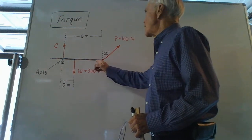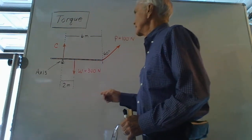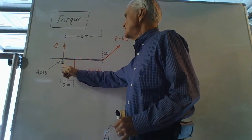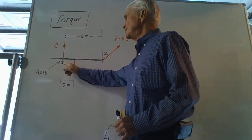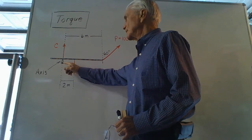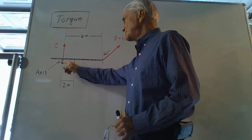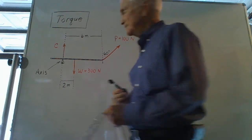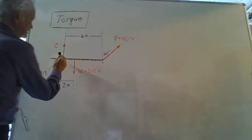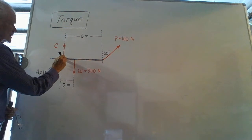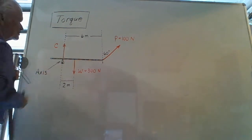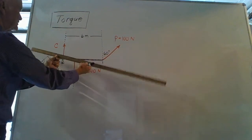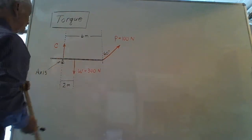I show a rod placed on top of a pyramid-shaped object called a fulcrum, which will serve as a possible axis of rotation of this object. Imagine an axle into the board. The rod could rotate about that axis, depending upon the values of the various forces acting on the rod.